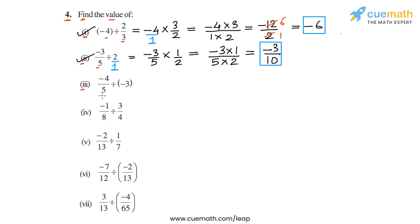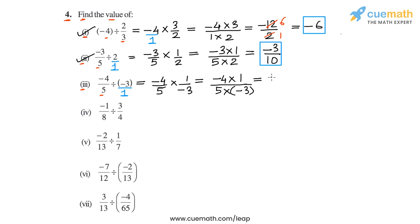In part 3, we have to calculate -4/5 divided by -3. Writing -3 as -3/1, we multiply -4/5 by the reciprocal of -3/1, which is 1/(-3). Multiplying numerators gives -4 × 1 = -4, and denominators gives 5 × (-3) = -15, so we get -4/(-15). Dividing above and below by -1 gives 4/15. So in part 3, the value is 4/15.